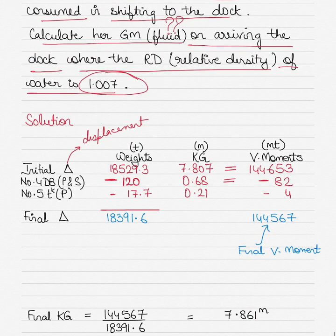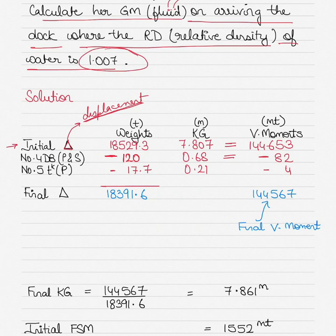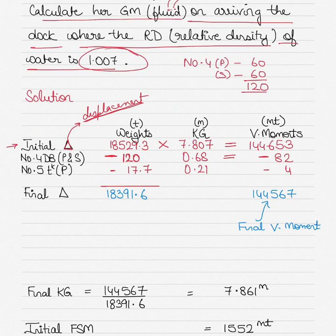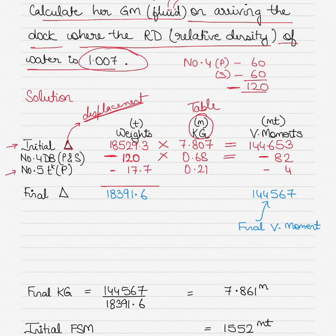In the calculation, I take the initial displacement from the table and the initial KG from the table, multiply these two values to get the initial vertical moment. Then for number 4 double bottom tanks port and starboard, I discharged 60 tons each — 120 tons total — so it is subtracted. I multiply 120 tons by the KG of the tank which is 0.68, giving a vertical moment of 82 metric tons which is subtracted.